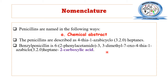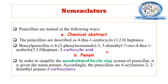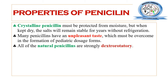The other method is the penem method, which is used to name penicillin according to the unsubstituted bicyclic ring present in penicillin — the penem. According to this method, penicillin can be named as 6-acylamino-2,2-dimethylpenam-3-carboxylate. In this method, the position of the carboxylic acid comes at the third position.